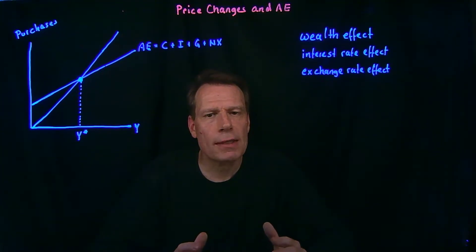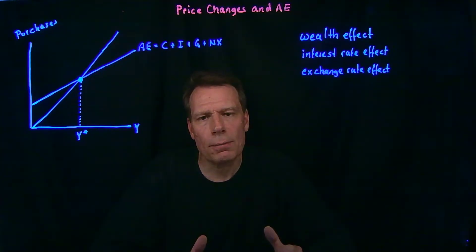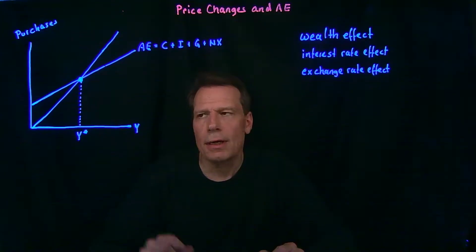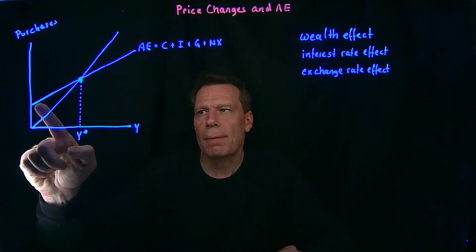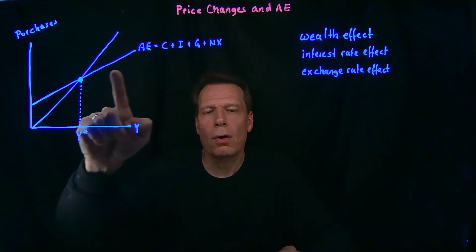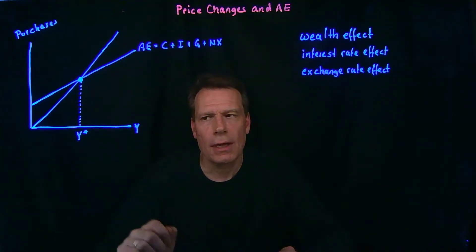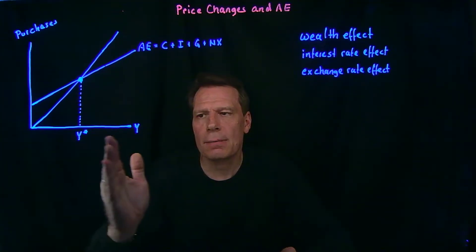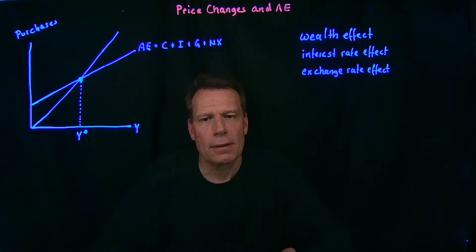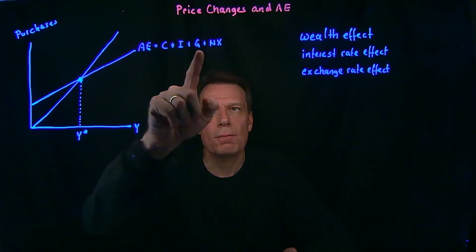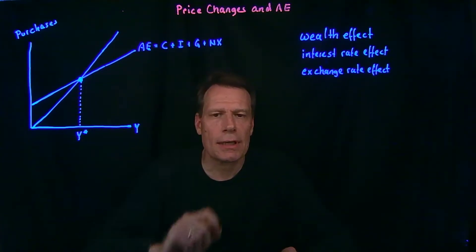We've seen that we can find a macro equilibrium in a graph with two lines representing two equations. The first line tells us what happens to overall purchases, or aggregate expenditures, as income in the economy increases. And aggregate expenditures are just composed of consumption, investment, government purchases, and net exports.